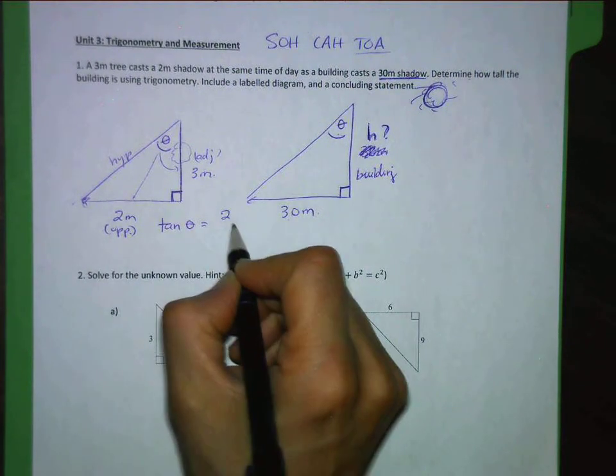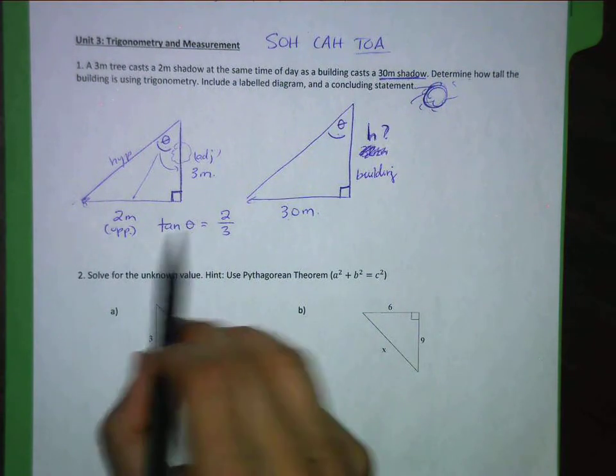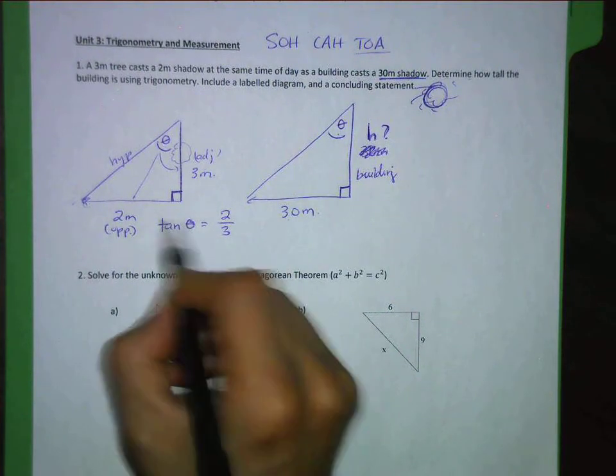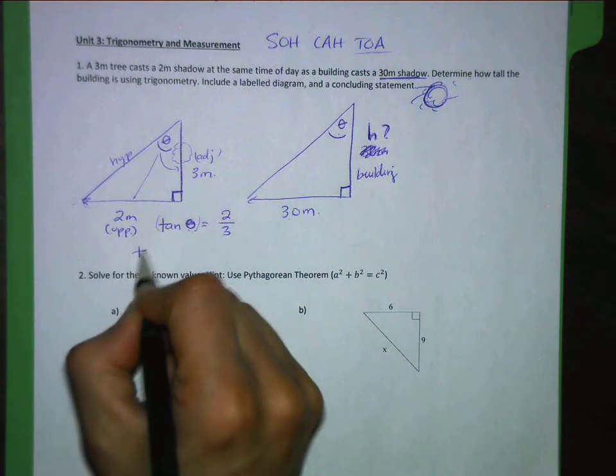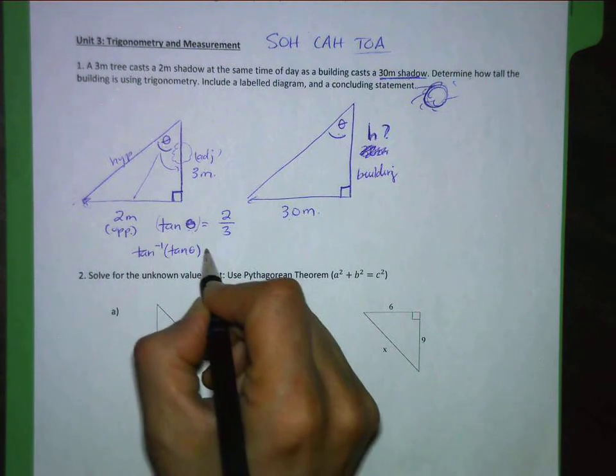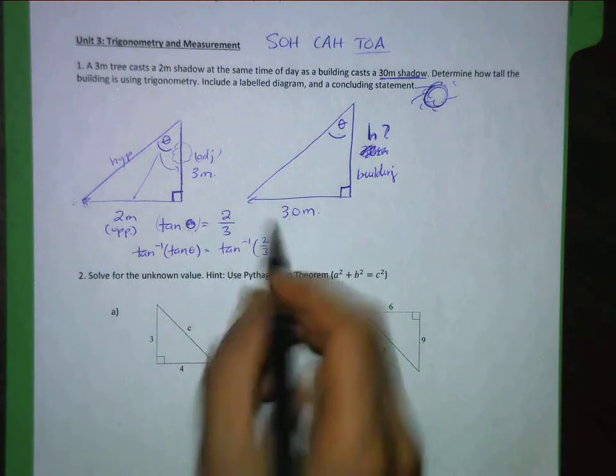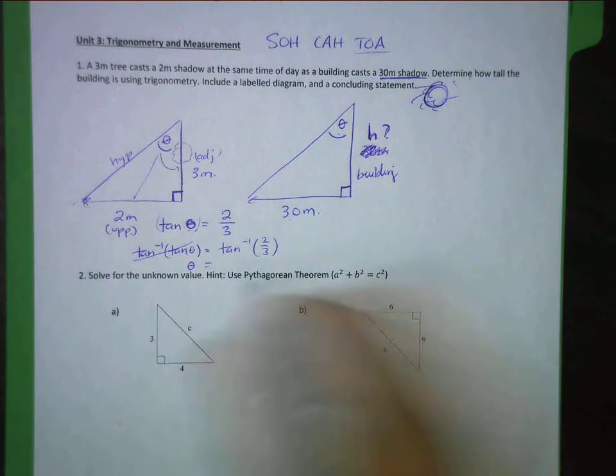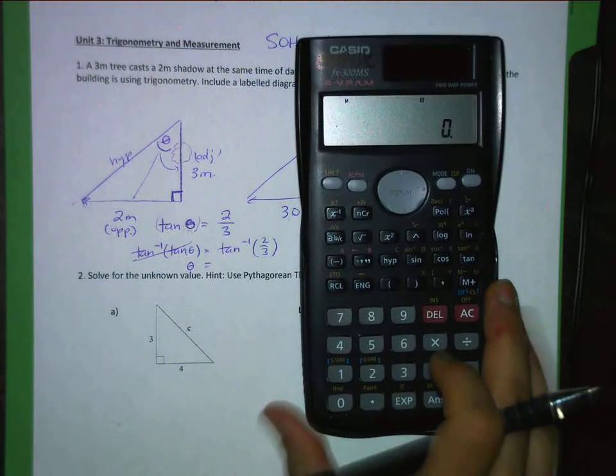So, tan of theta equals opposite over adjacent. Now, on this one, I'm solving for theta. So that means I need to find the tan inverse because theta, this is a number and theta is kind of trapped inside that function. So to get it out, I need to use tan inverse. Tan theta and I need to go tan inverse of 2 over 3. So these end up doing the opposite. So I'm just looking for theta and I'll show you how I do that in the calculator.